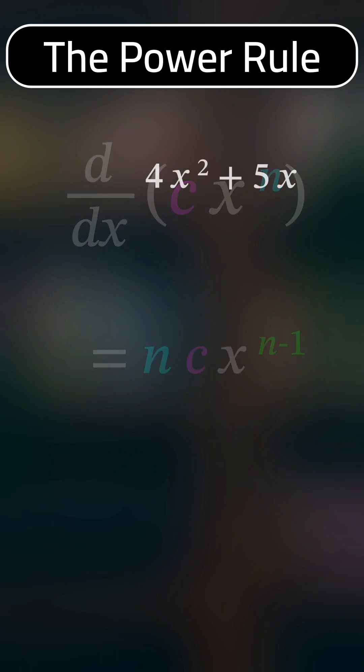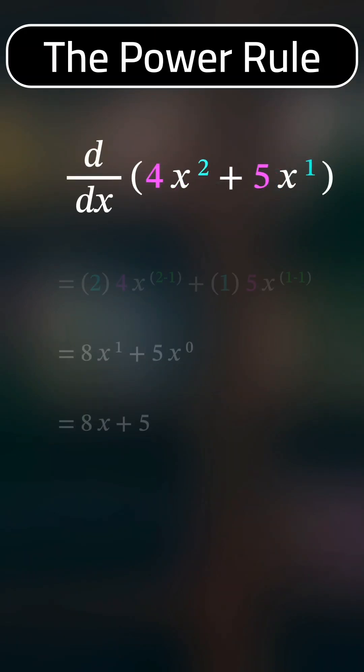For example, using the power rule we can find the derivative of 4x squared plus 5x to be 8x plus 5.